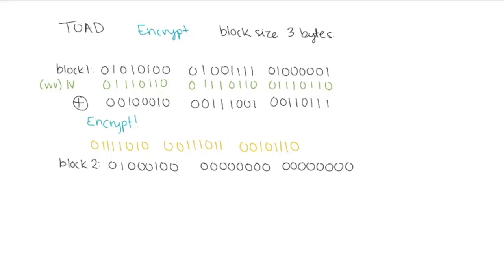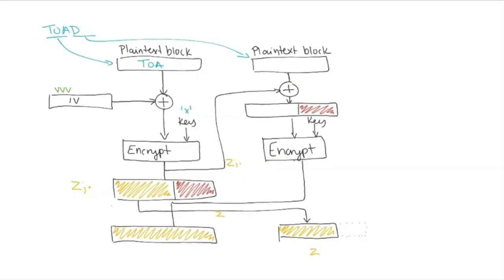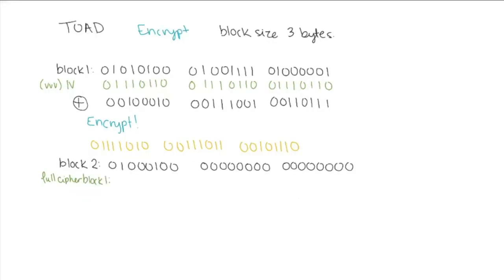We take our second block and we're going to be padding it with zeros so it's going to be D zero zero in our second plaintext block. Like I said before we'll take that first full cipher block and we'll be XORing it. Now because we are XORing it with zeros at the end padding we're actually getting the exact same last two bytes so keep that in mind when we encrypt it.